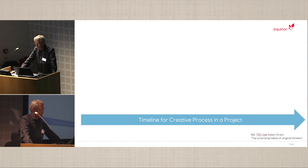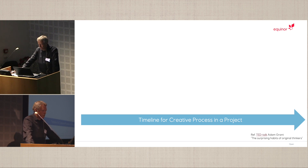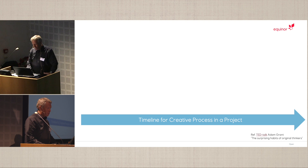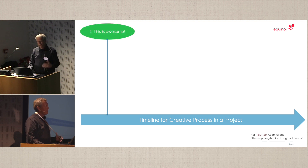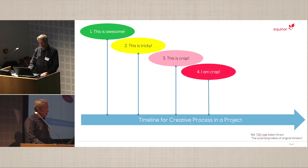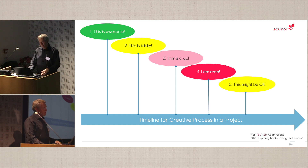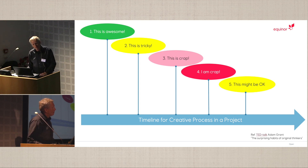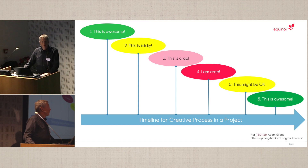We achieved great results over these past three years, but it has been challenging. I found a descriptive timeline from Adam Grant's TED talk that describes our process well: we started with 'this is awesome,' then tried on real data and thought 'this is tricky,' then 'this is crap.' We questioned ourselves, but the important thing is you struggle and continue, you don't give up — because then you get to 'this might be okay,' and now we're back to 'this is awesome.'